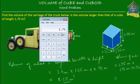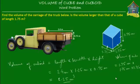1.75 times 1.75 times 1.75. And that's equal to 5.359. So 5.359 meter cube.